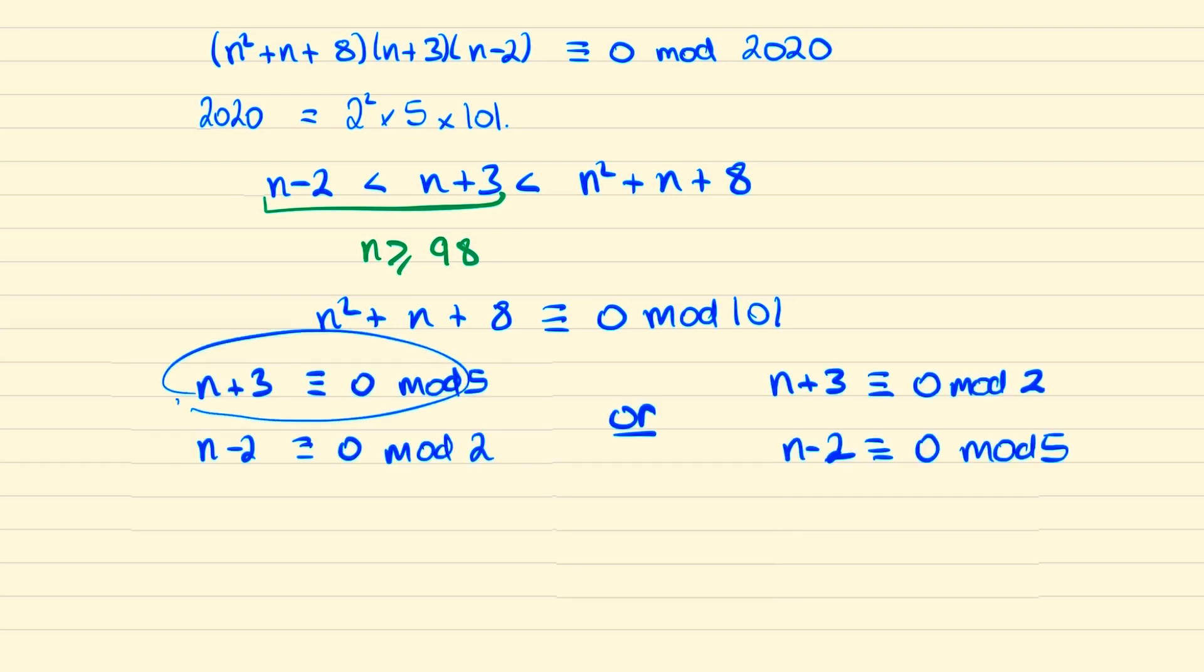And notice that when n plus 3 is 0 mod 5 this is saying n is congruent to minus 3 which is congruent to 2 mod 5. And likewise from this one we also have that n is congruent to 2 mod 5.